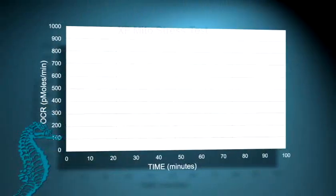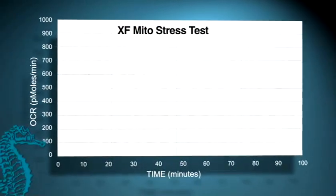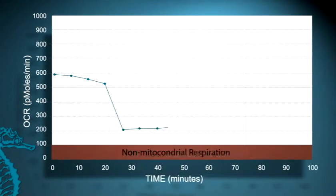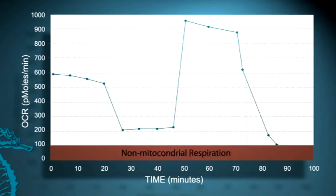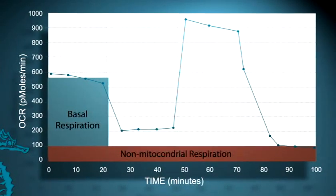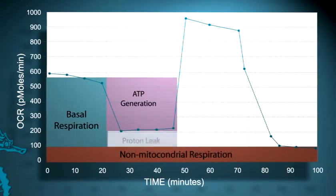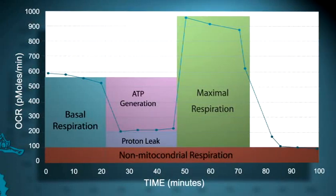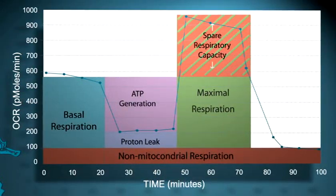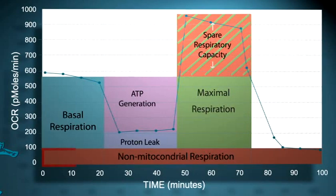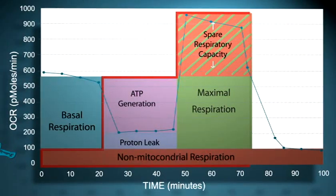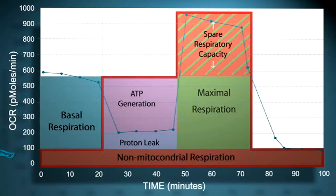This ability to add multiple drugs makes it possible to perform the XF mitostress test. This test reveals the four fundamental parameters of mitochondrial function: basal respiration, ATP generation, proton leak and maximal respiration, or spare respiratory capacity — all in one experiment. This mitostress test provides a wealth of information in addition to just measuring basal metabolism.